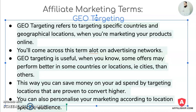Geo-targeting is useful when you know some offers may perform better in some countries or locations, i.e. cities, than others. This way, you can save money on your ad spend by targeting specific locations that are proven to convert higher. You can also personalize your marketing according to a location-specific audience.